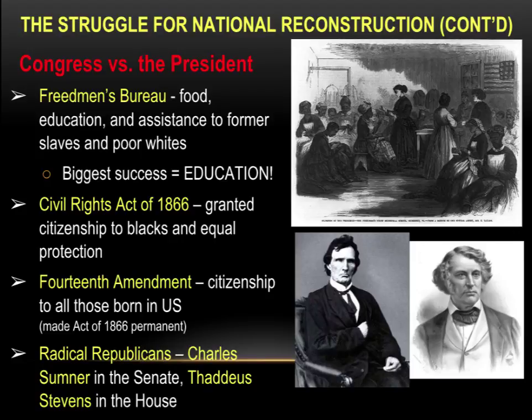The Radical Republicans were growing in numbers after the Civil War. They were led in the Senate by Charles Sumner of Massachusetts and in the House by Congressman Thaddeus Stevens of Pennsylvania. If you've seen the film Lincoln, Thaddeus Stevens was a main character pushing ratification of the 13th Amendment. Stevens is pictured on the bottom left, and Charles Sumner of Massachusetts is on the right.